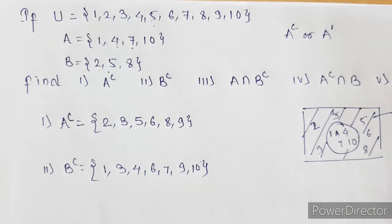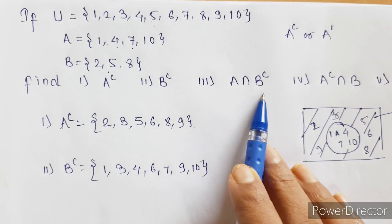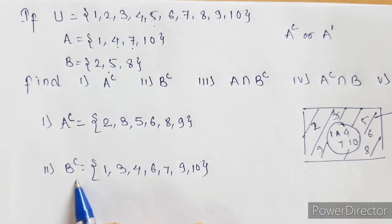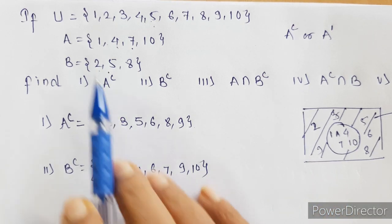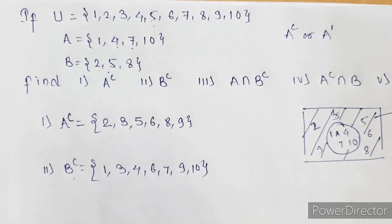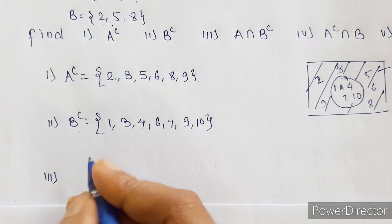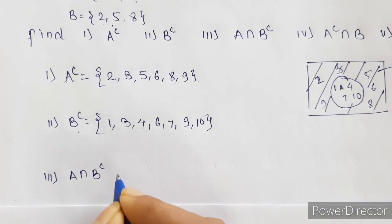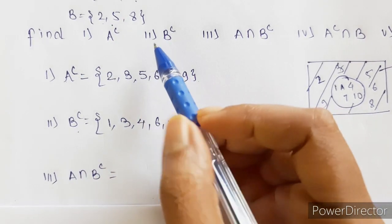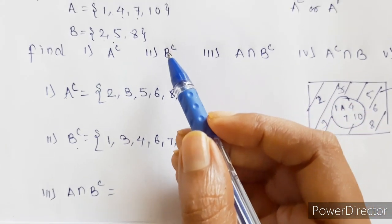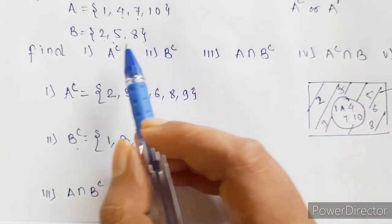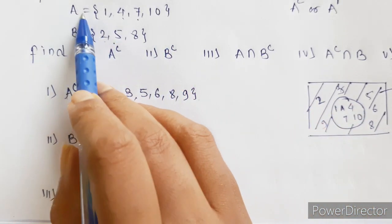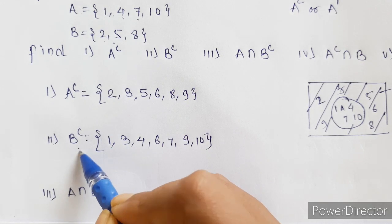Next we have to find A intersection B complement. We already have B complement, so we have to find the intersection between set A and B complement.